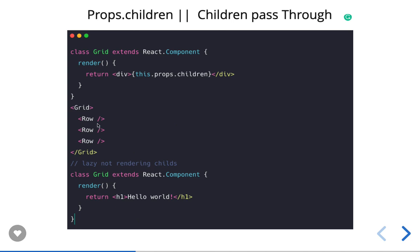For a Grid component, props.children represents all the Row tags inside it. If you use this.props.children in the Grid component definition it will render all three rows - but you can override it. This is called children pass-through: there may be a condition where you want to render children, and sometimes you don't, so you override with something like 'Hello World'.